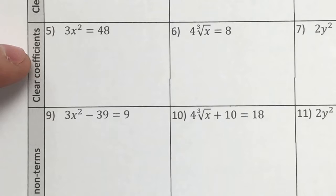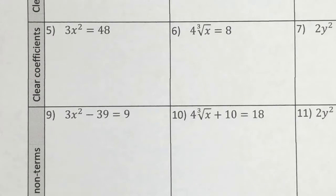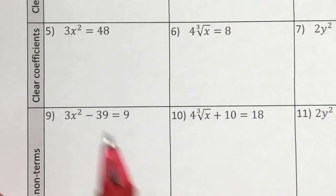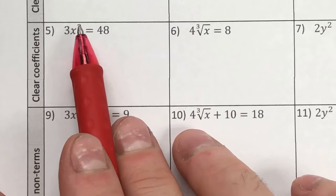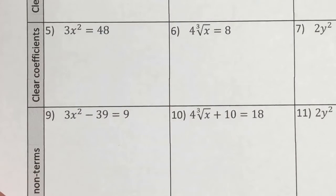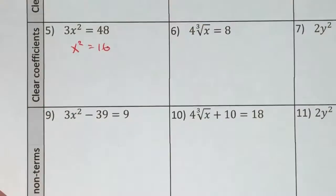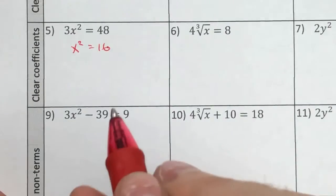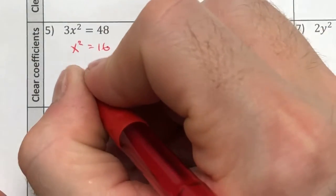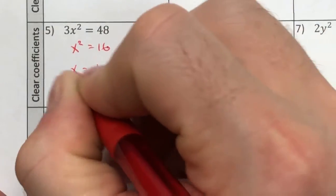Let's go ahead and add another step to this. If I'm clearing the coefficients, I'm going to look at these two and say, before I get rid of the root, I have to get rid of the coefficient. So why don't we go ahead and we divide both sides by three, which will leave me with x squared is equal to 16, in which case then I go through and I solve and say, x is equal to a positive or negative four.